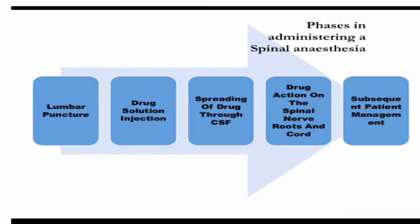Let us quickly review the phases in administering spinal anesthesia. The first step is lumbar puncture, followed by drug solution injection, then spreading of the drug through CSF, then drug action on the spinal nerve root and cord, and subsequent patient management.